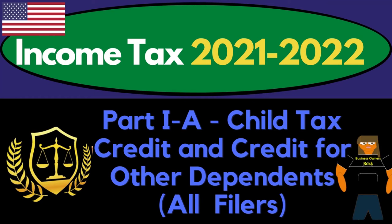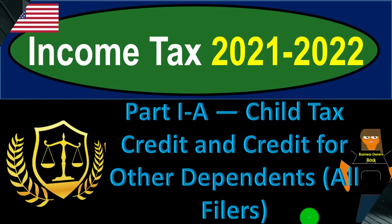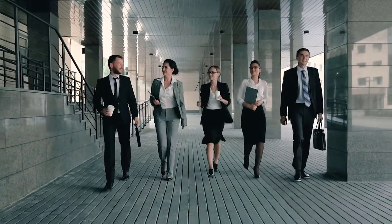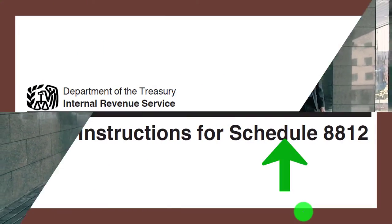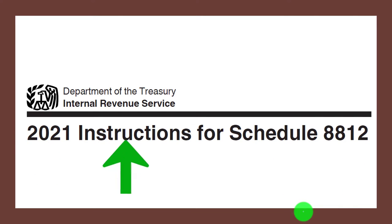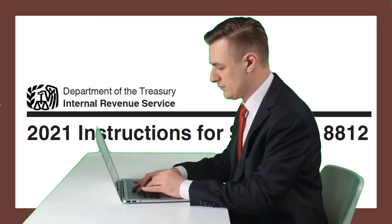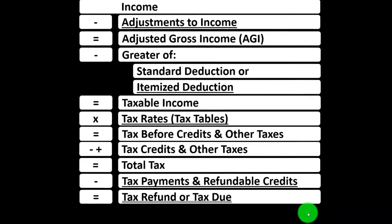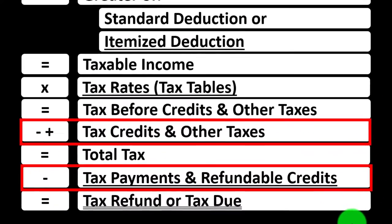Income Tax 2021-2022, Part 1A: Child Tax Credit and Credit for Other Dependents, All Filers. Get ready to get refunds to the max, diving into Income Tax 2021-2022. Most of this information can be found in the Schedule 8812 Tax Year 2021 instructions on the IRS website at irs.gov. The income tax formula — we're down here in the credit area.